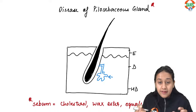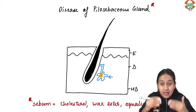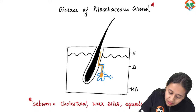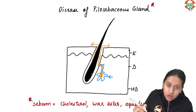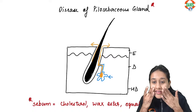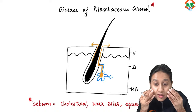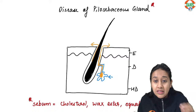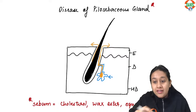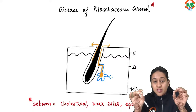The sebum drains from the sebaceous gland through the sebaceous duct into the hair follicle and then onto the surface of the skin. After puberty, this creates an oily layer on the skin — this is sebum coming out of the sebaceous gland via the hair follicle.